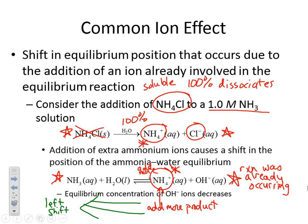Adding too much product means you shift to the left in order to create more reactant. What that means is that the amount of hydroxide we have is actually going to go down, because we're shifting away from the hydroxide. By adding that product — that NH4+, that common ion — to the equilibrium reaction that was already occurring, we've shifted away from the products and more towards the reactants.